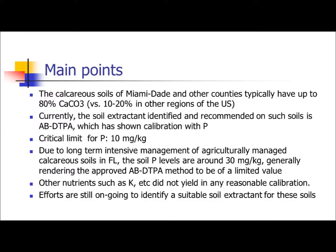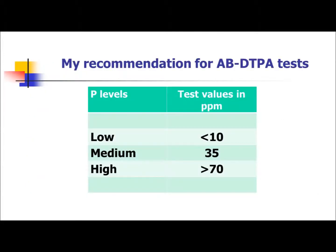The main point is that currently soil extraction to identify and make recommendations for calcareous soils uses Mehlich-3 for phosphorus only, with a critical level at 10 parts per million. Soil phosphorus in calcareous soil is typically around 30 parts per million. Other nutrients such as potassium do not yet have a reasonable calibration — contact me if you have questions. Based on my research on phosphorus, I made my own recommendation using Mehlich-3: below 10 ppm is low, above 70 ppm is too high. I use a certified range in the middle. That is my calibrated recommendation for phosphorus.